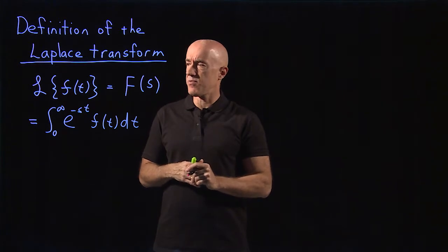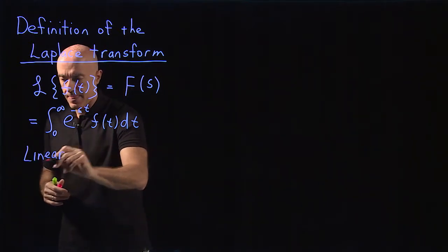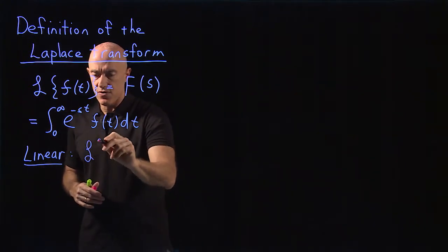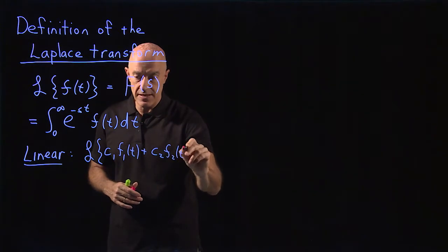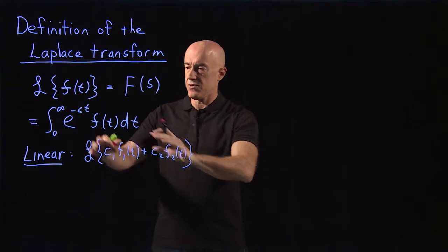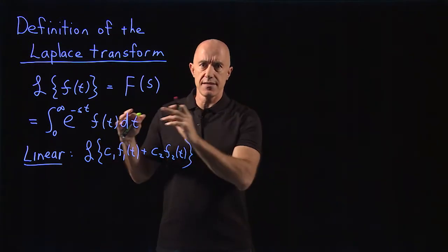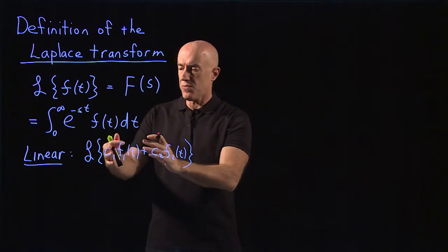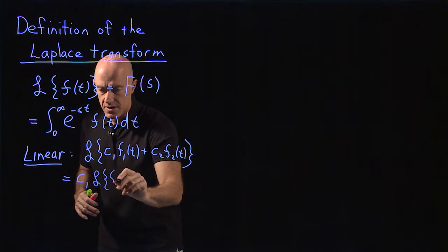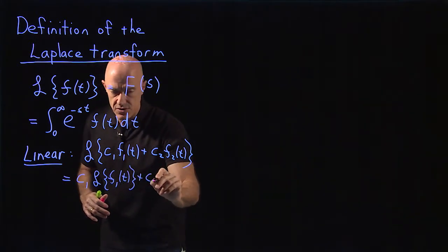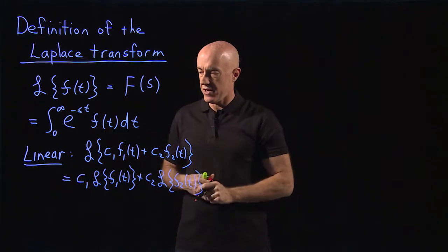The Laplace transform has some nice properties. One is that it's a linear transformation. That means if you take the Laplace transform of c1 times f1 of t plus c2 times f2 of t, you can use the fact that the integral of a sum of two functions is a sum of two integrals, and you can pull constants out of integrals. So this equals c1 times the Laplace transform of f1 of t plus c2 times the Laplace transform of f2 of t.